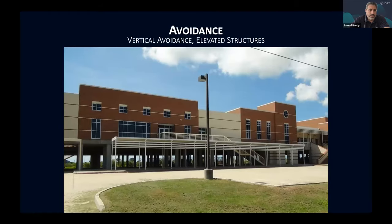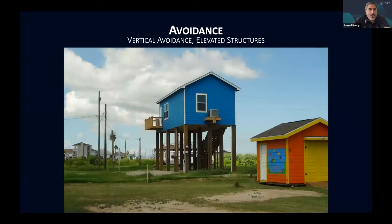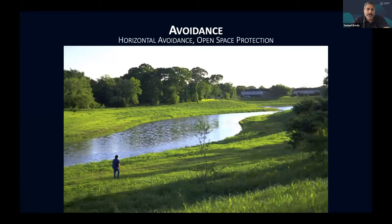Avoidance can be a vertical proposition — a school built after Hurricane Ike on Galveston Island in 2008, or a home raised at least nine feet after Hurricane Harvey in Houston in 2017. We need to be careful about how high we go and what's feasible, equitable, and accessible. On Bolivar Peninsula, a one-room cabin was elevated at least 12 feet. Avoidance can also be horizontal — pulling back from critical areas like riparian areas, where you gain multiple values: recreation, ecological value, and home values around open spaces tend to increase.